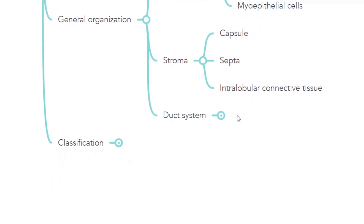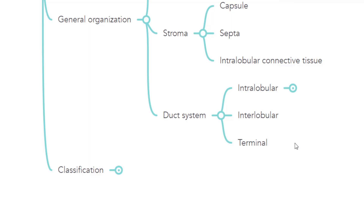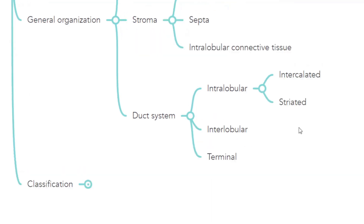Coming to the duct system: the ducts arising from the acini or tubular secretory portion are called intralobular ducts, which have two parts. The initial part arising from the secretory portion is the intercalated duct, and these intercalated ducts join to form the striated duct. The striated ducts join to form the interlobular ducts, which pass between lobules in the interlobular connective tissue along with blood vessels. These ducts ultimately join to form a single main terminal duct which opens into the oral cavity.